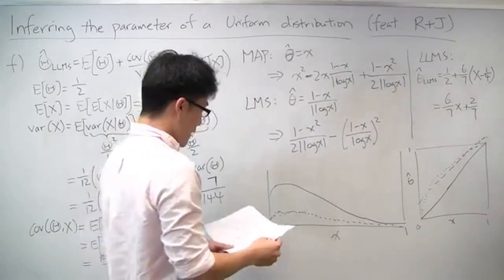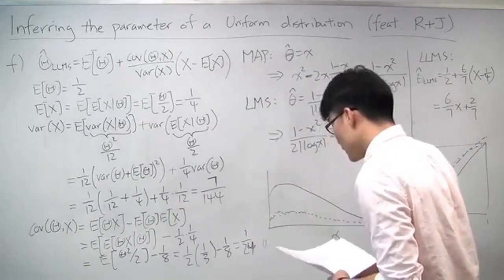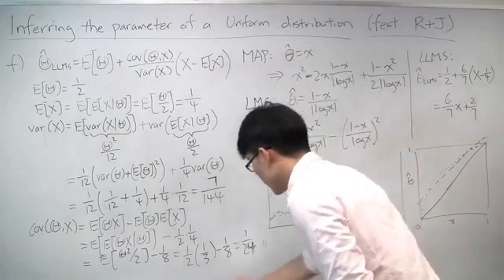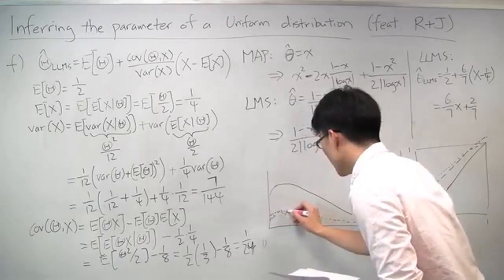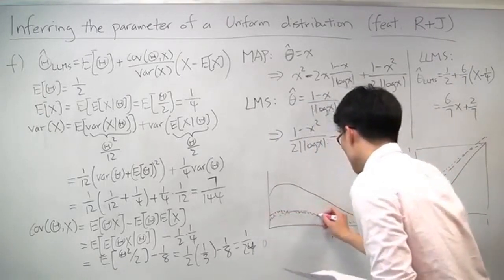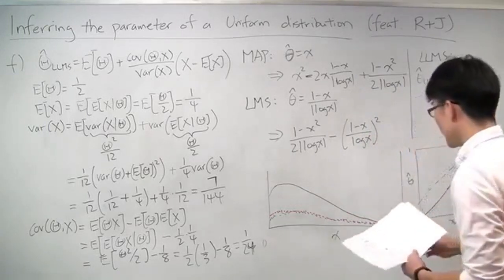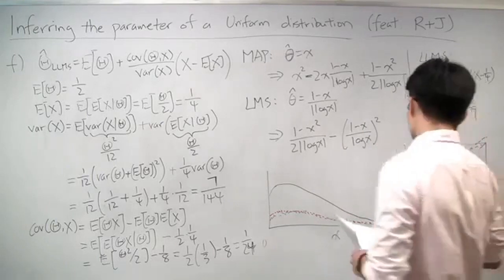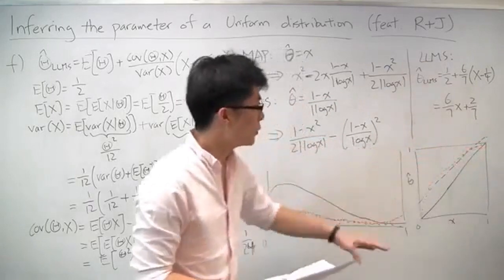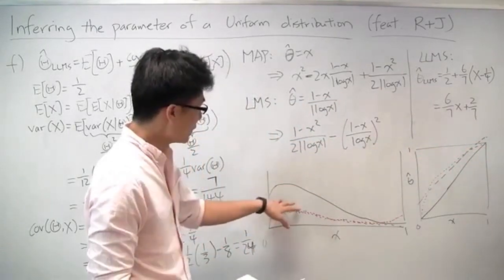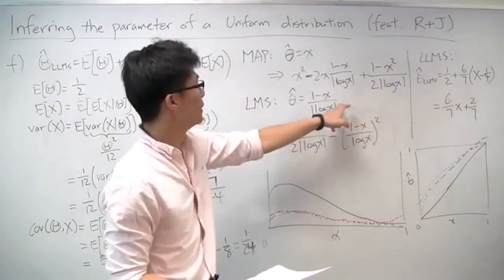The performance in terms of conditional mean squared error is actually fairly close to the LMS estimator — pretty close until you get close to x equals 1, at which point it does worse, precisely because it produces estimates of theta greater than 1. But otherwise it performs well with an estimator that is much simpler in form than the LMS estimator.